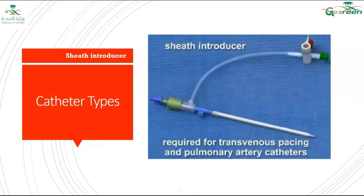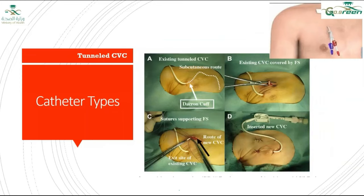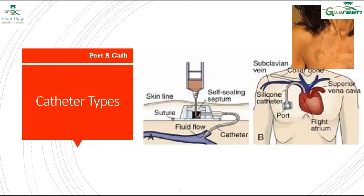We can use an introducer sheath to insert certain devices like pacing wires or pulmonary artery catheters — this is also a catheter type. If we go to tunneled versus untunneled: untunneled means there is no part of the catheter under the skin. A tunneled central catheter has a specific portion under the skin, which keeps it in place for longer periods — tunneled catheters are used for longer-term access. A port catheter is used for even longer durations, such as in patients needing chemotherapy. The port hub sits under the skin and can have one or two hubs for drug injection.